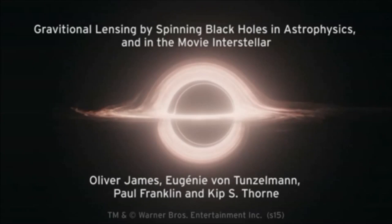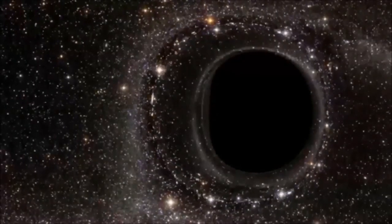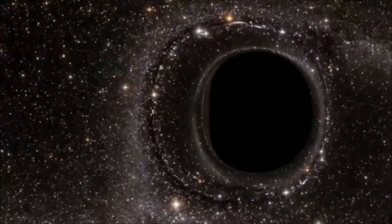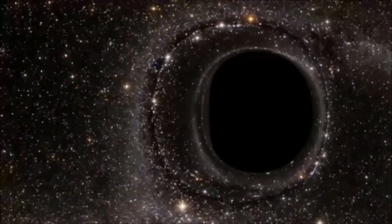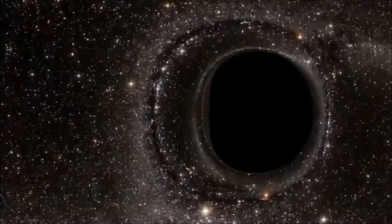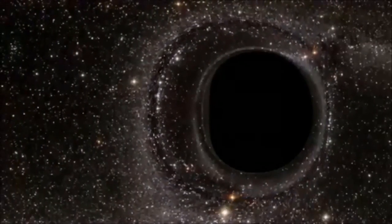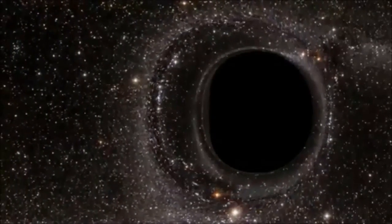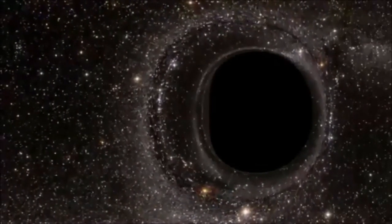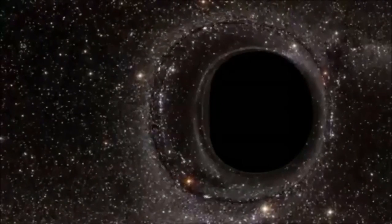Christopher Nolan's movie Interstellar was the driving force behind this work. A key part of this project was the development of the Double Negative gravitational renderer. This computer code creates images by modelling the path of light as it's warped by the immense gravity of a black hole.